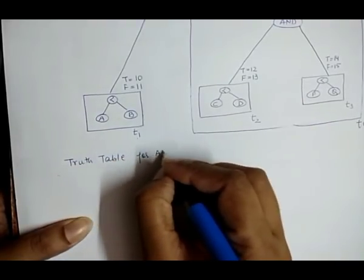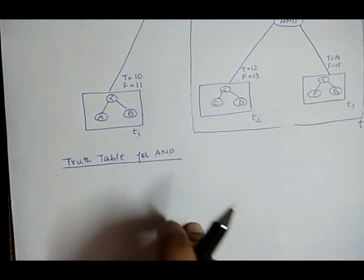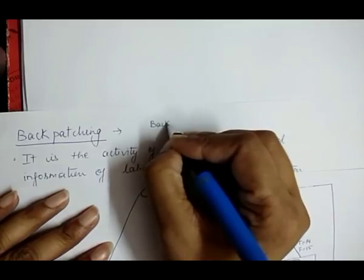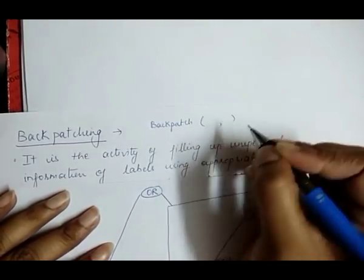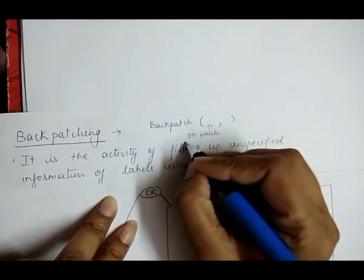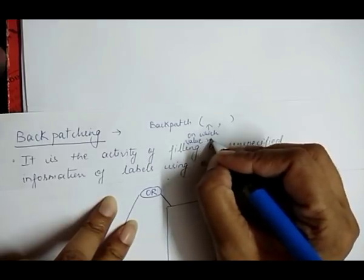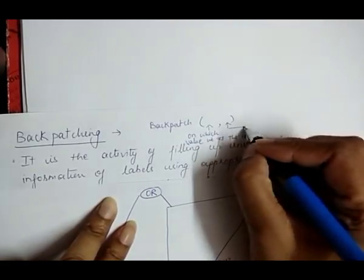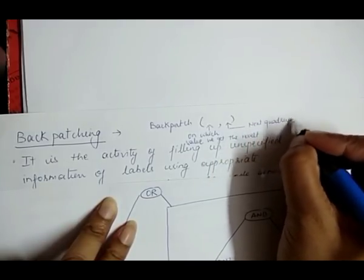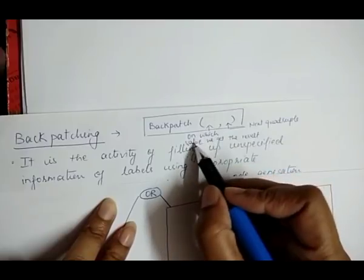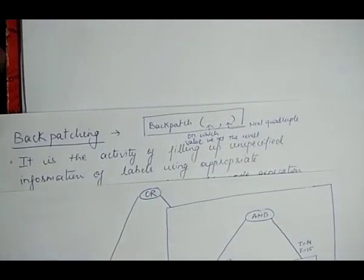One important thing is the syntax for backpatching. The syntax is: backpatch(field1, field2), where the first field shows on which value we get the result — whether true or false — and the second field shows the next quadruple. This is how we represent a backpatch.